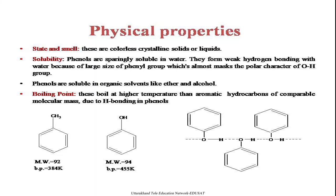Coming on to the boiling point of phenols. These boil at higher temperatures than aromatic hydrocarbons of comparable molecular mass. For example, toluene and phenol have comparable molecular weights — toluene is 92 and phenol is 94 — but there is a large difference in their boiling points. Toluene boils at 384 K whereas phenol boils at 455 K. This difference is due to hydrogen bonding. Though there is less hydrogen bonding in phenols than in alcohols, the boiling point is still higher than the corresponding aromatic hydrocarbons.